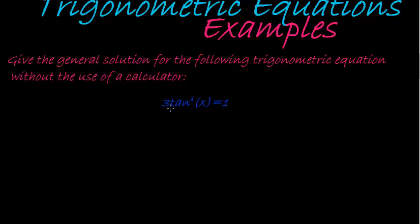For example, if we divide both sides by 3, we have to do that first before we take the square root, we get that tan squared of x is equal to a third.